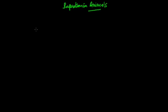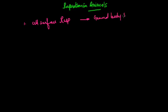There are different types of respiration based on the organs involved. The first type is cell surface respiration, which involves the general body surface. Animals that use cell surface respiration include amoeba, paramecium, and other unicellular organisms.